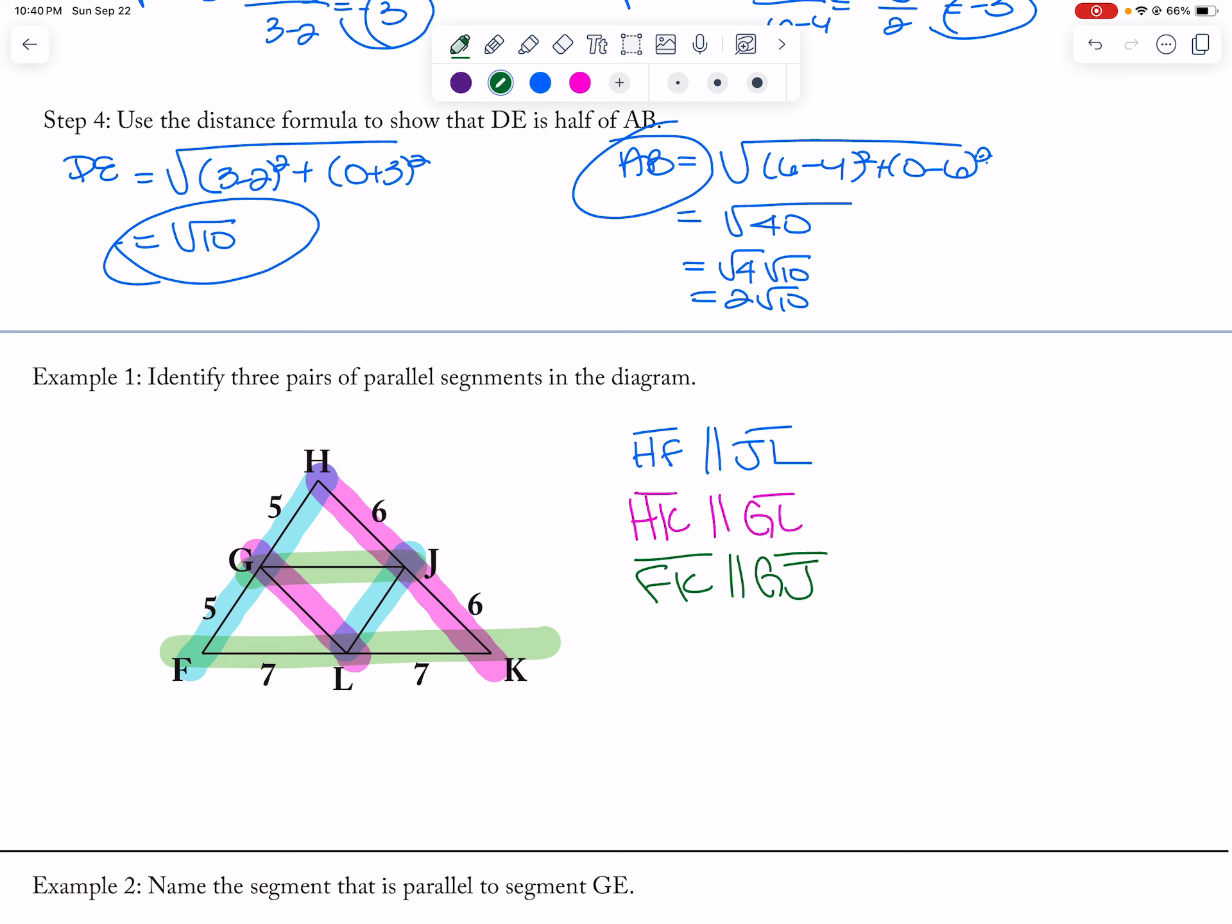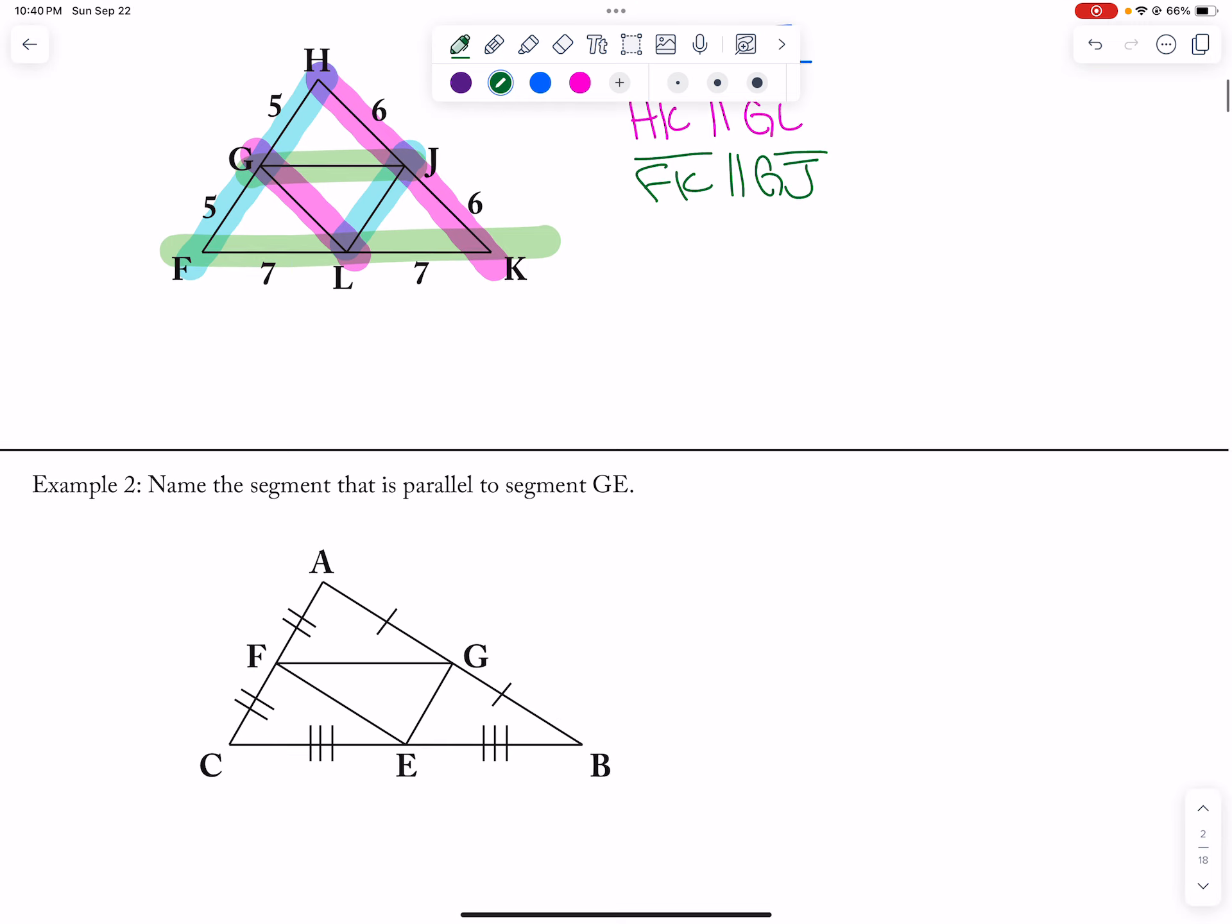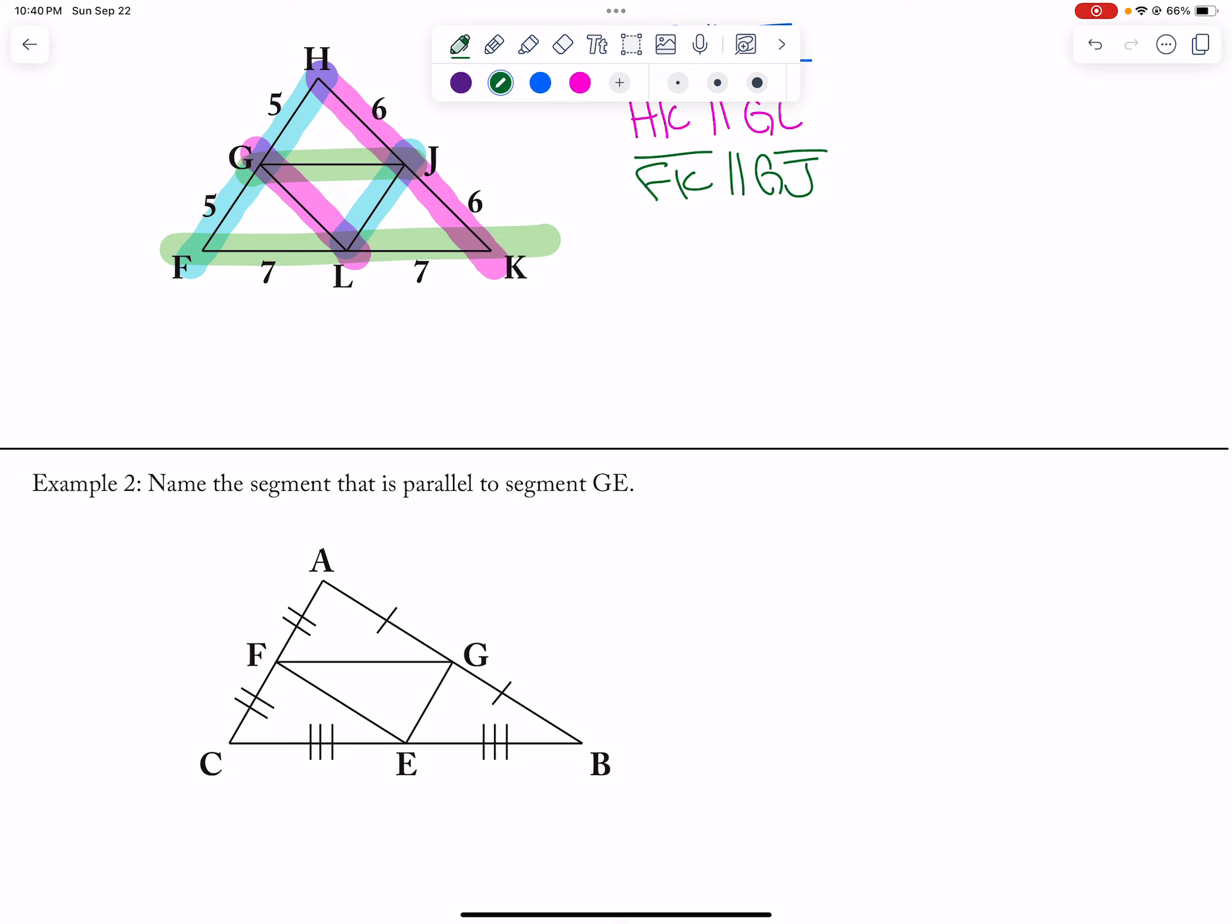And then I want a parallel line segment to GE, which I would have chosen AC, the bigger one. Only because there is that relationship. You could have chosen A to F or F to C. That would have also worked as well. Alright, so that is it for the notes.